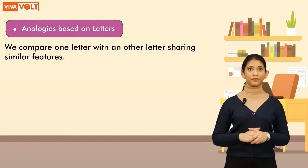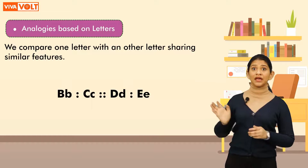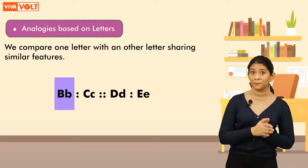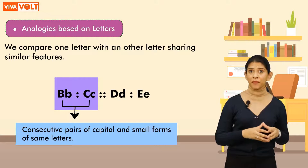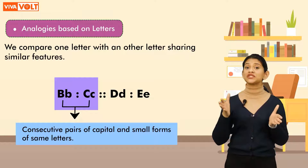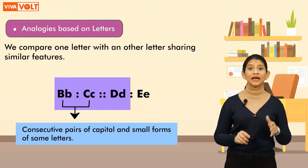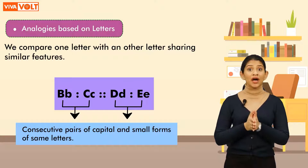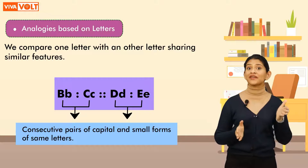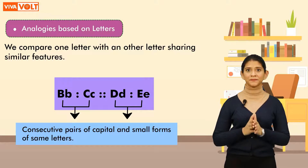Let's look at one more example. Here, Bb and Cc are consecutive pairs of capital and small forms of the same letters. Similarly, Dd and Ee are also consecutive pairs of capital and small forms of the same letters.